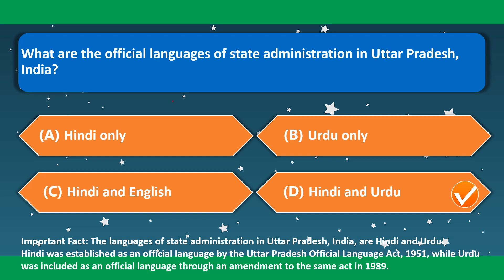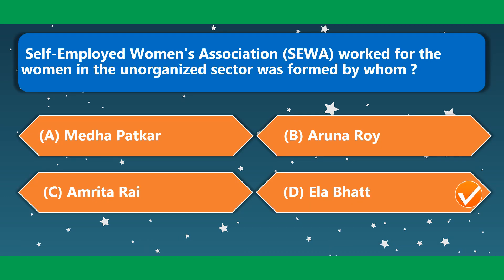Hindi was established as an official language by the Uttar Pradesh Official Language Act 1951, while Urdu was included as an official language through an amendment to the same act in 1989. The author of the book 'Dalit Visions' is Gail Omvedt. Self-Employed Women's Association, which worked for women in the unorganized sector, was formed by Ela Bhatt.